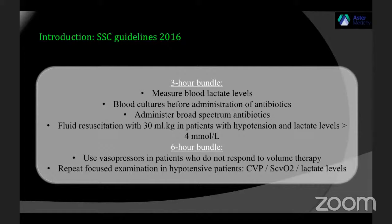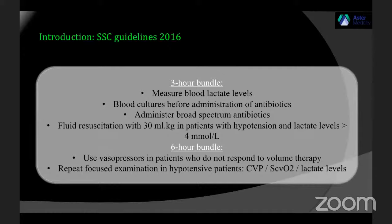When the Surviving Sepsis Campaign was published in 2016, there was a 3-hour bundle and a 6-hour bundle. The 3-hour bundle requires measuring blood lactates, sending blood cultures before antibiotics, administering broad-spectrum antibiotics, and fluid resuscitation at 30 ml per kg in patients with severe hypotension or a lactate level of more than 4 millimoles per liter. The 6-hour bundle added vasopressors if patients don't respond to fluids, plus repeat focused examination including CVP, central venous oxygen saturation, and lactate.